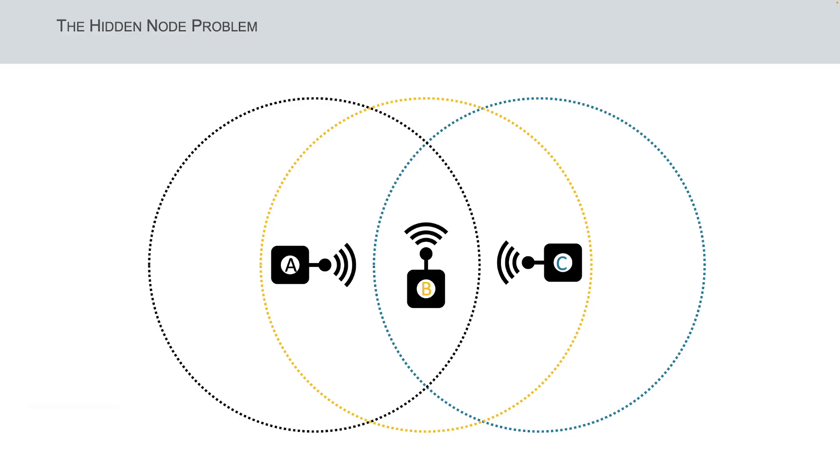However, nodes A and C cannot communicate with each other as they are out of range. These nodes A and C are known as the hidden nodes.